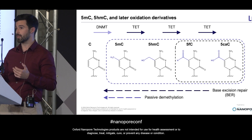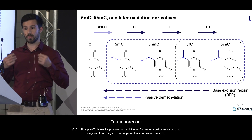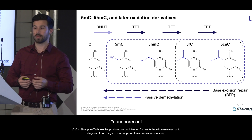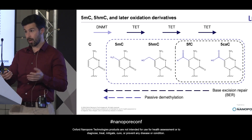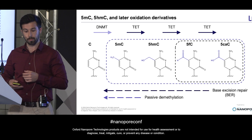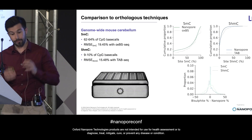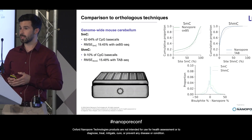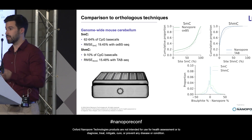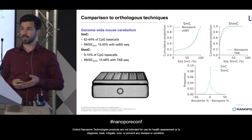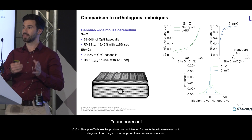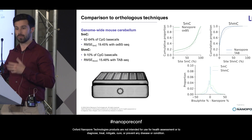The aims of my research project involve validating the use of Nanopore sequencing to detect these modifications in DNA, and also finding new ways to use this data to learn more about them. I've gone about this by making comparisons to orthologous sequencing techniques — oxidative bisulfite sequencing and TAB-seq, that's OxBS and TAB-seq, for 5-mC and 5-HMC detection respectively.